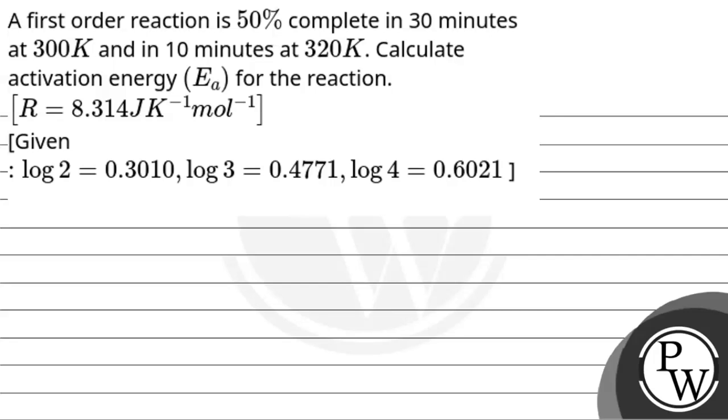So let's read the question. The question says a first order reaction is 50% complete in 30 minutes at 300 Kelvin and in 10 minutes at 320 Kelvin. Calculate the activation energy Ea for the reaction.